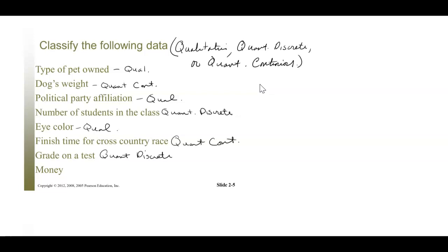The grade on a test — that's counting the points and giving you a score, so that would be quantitative discrete. Money — many people would argue you can count money, you can count the change in your pocket or the money in your bank account, so for the most part money is quantitative discrete. But when doing calculations involving banking and taxes, some people argue money is actually continuous. That one tends to be left up to how it is used, but for the most part we would say money is quantitative discrete.